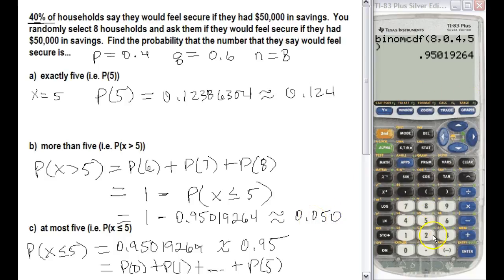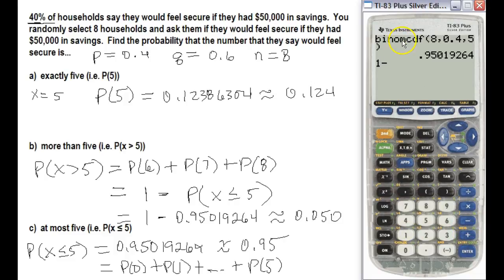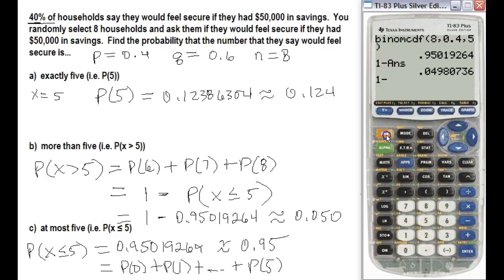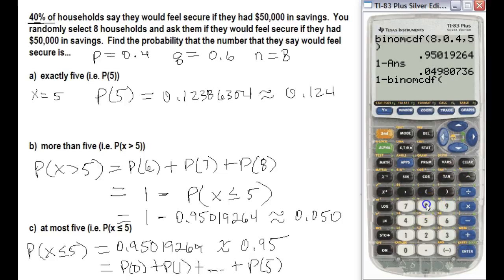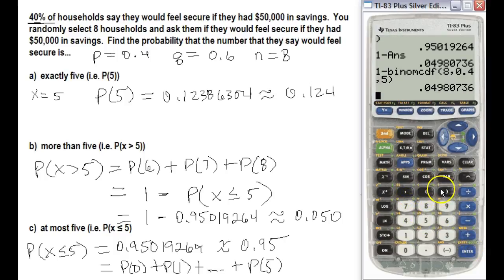To calculate Part B directly on the calculator, type 1 minus, then press Second and VARS, scroll to option A for binomcdf, and enter 8, comma, 0.4, comma, 5, close parenthesis, and press Enter. You can also use Second and the negative sign to reference the previous answer. Either way, we get the same result of approximately 0.050.